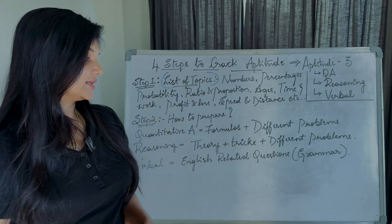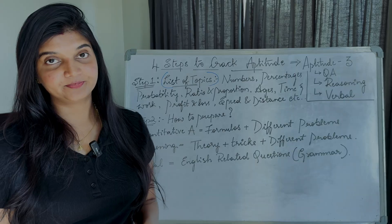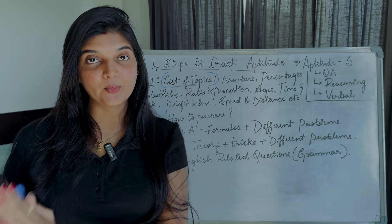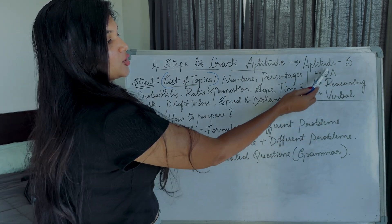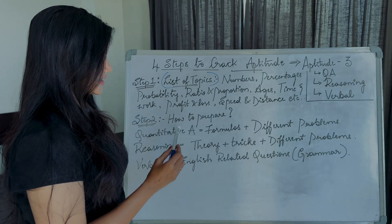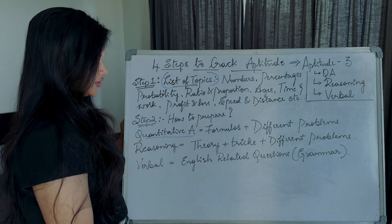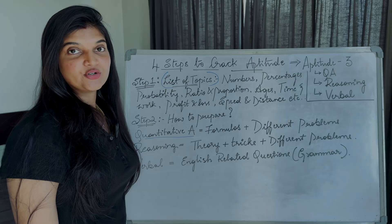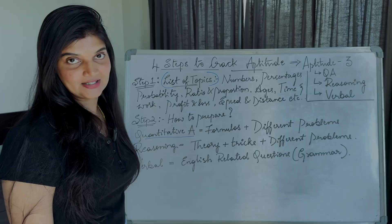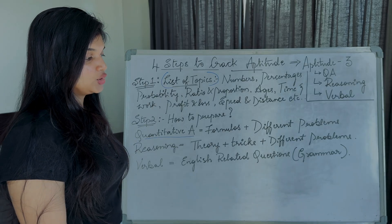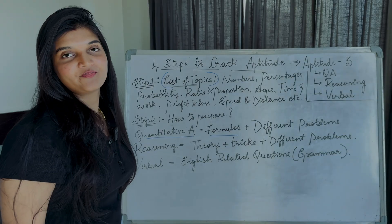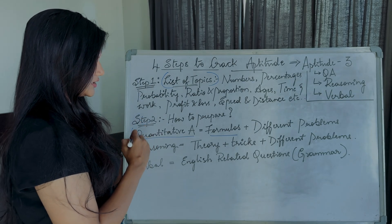Let's talk about the second step. How to prepare? So you have taken down all the list of topics you want to work on, but how to prepare. So let's talk about all the three sections that comprise the aptitude. First section is quantitative aptitude. As I've already told you guys in my previous vlogs that quantitative aptitude is nothing but mathematics and calculations. So for that reason, you will require the formulas.